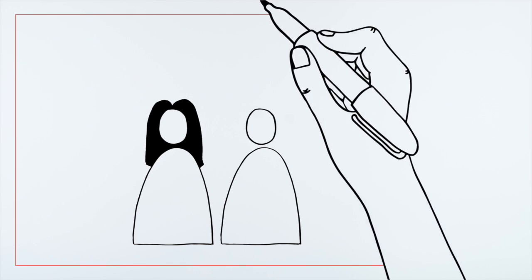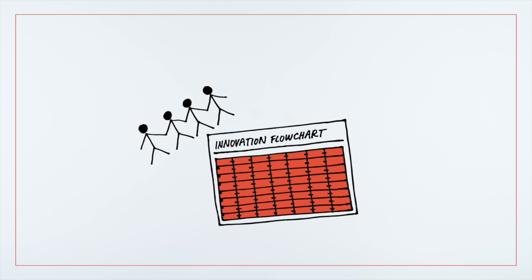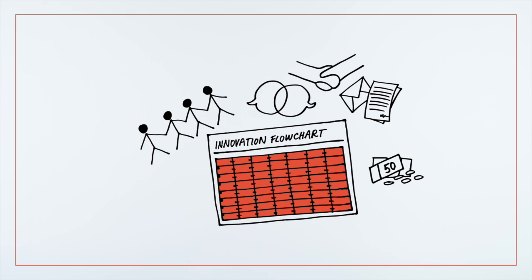The next step will be for Jennifer and Matthew to test their idea. They review the worksheet to make notes about the people, skills, activities, and finances that will be required for each stage of their journey. Though they have a long way to go, the innovation flowchart guides Jennifer and Matthew through the many aspects of their work.